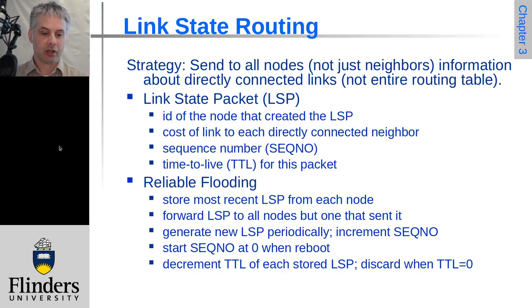So each node stores the most recent LSP that is received from each node, and it forwards each new LSP that it receives from a node to every other node except the one that sent it. And periodically it will update the LSP, although conceptually it only needs to update it when information changes. And so this has a lower quiescence or lower idle state bandwidth consumption than a distance vector algorithm typically will.